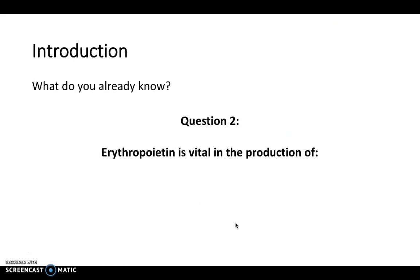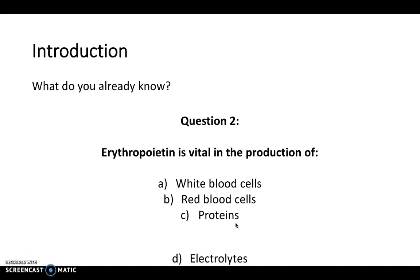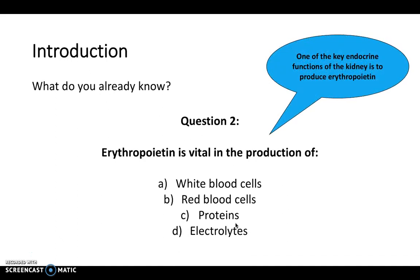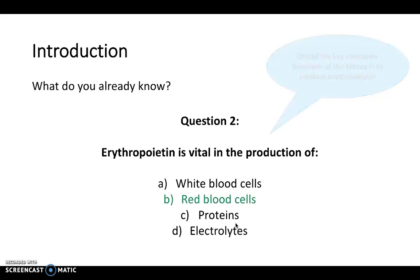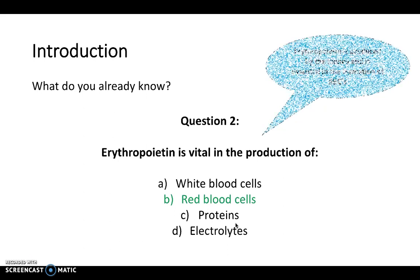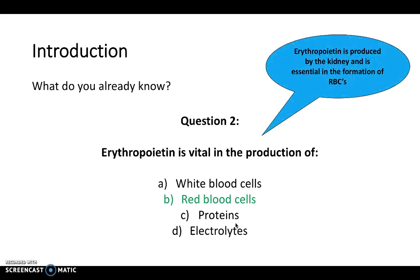Question two: erythropoietin is vital in the production of what — white blood cells, red blood cells, proteins, or electrolytes? Remember that the kidney has endocrine functions, and one of these is to produce erythropoietin, which is vital in the production of red blood cells.